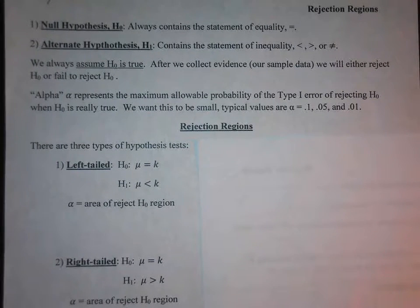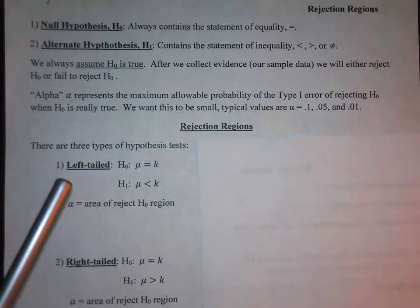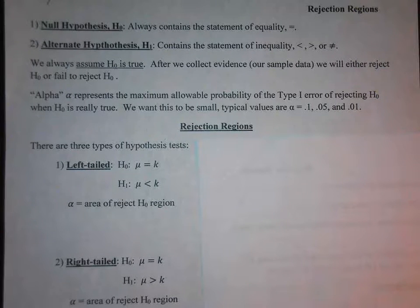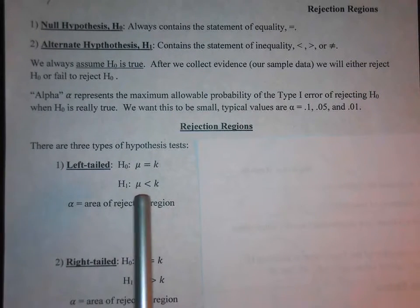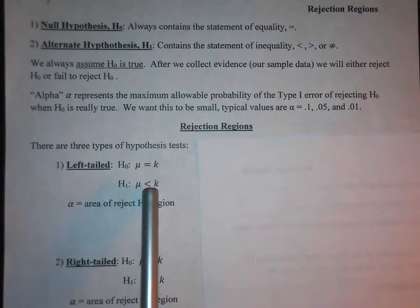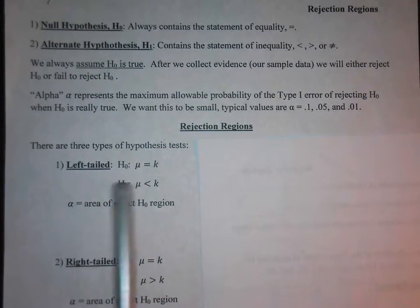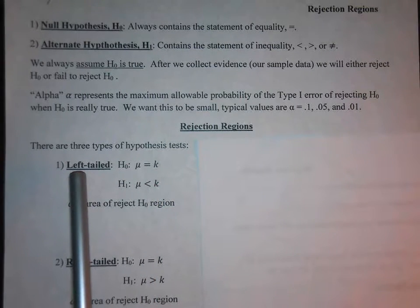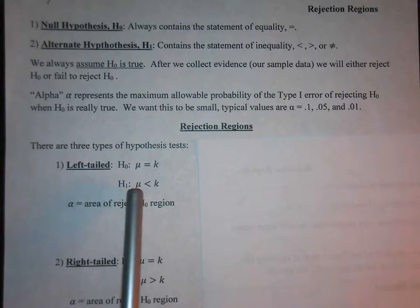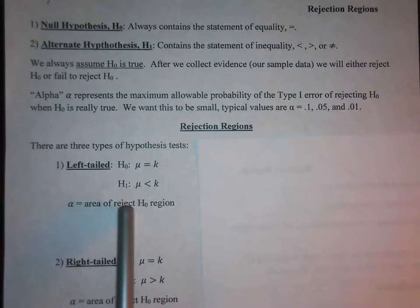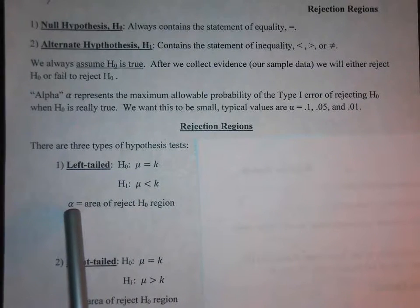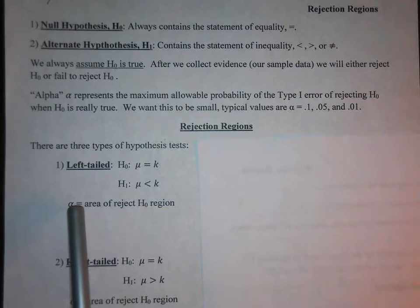We essentially have three different types of hypothesis tests: left-tailed, right-tailed, and two-tailed. For a left-tailed test, when the alternative hypothesis says mu is less than k, that tells us we're shading left. What we're shading is the area of the rejection region for H₀, and that area is alpha. So if alpha is 0.01, we're shading 0.01 area on the left-hand tail of the normal curve.